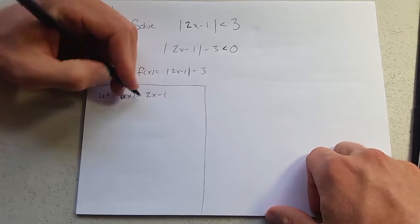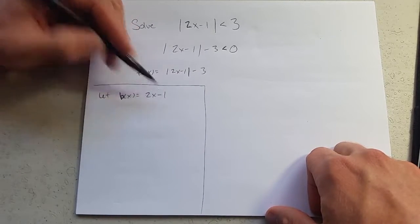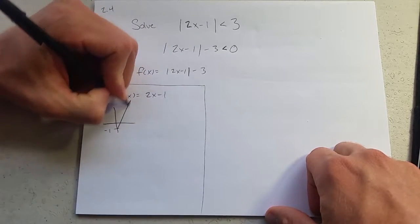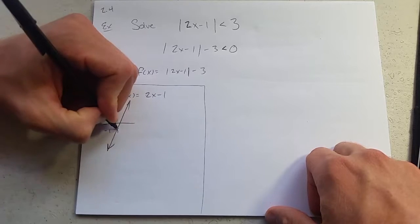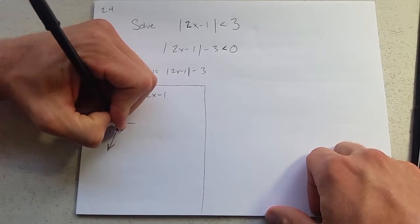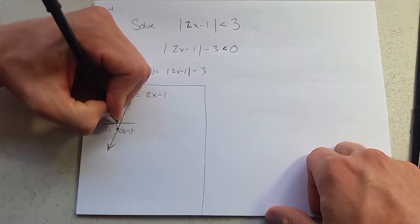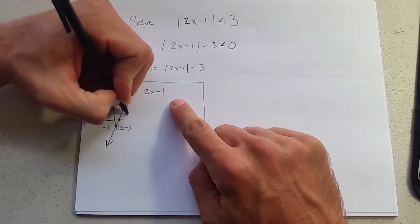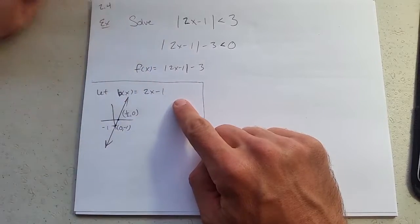So how do I graph this b of x? It's a linear function, slope 2, y-intercept negative 1. So our y-intercept negative 1. Our x-intercept, you go over a half and up 1. So this is one half comma zero.